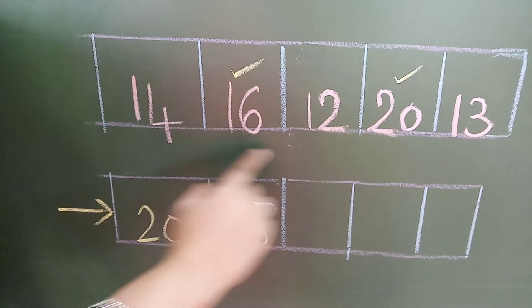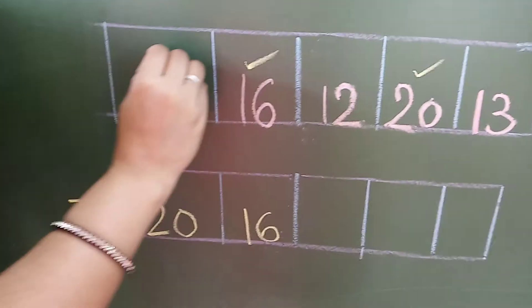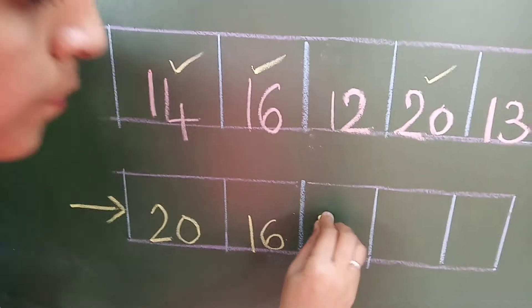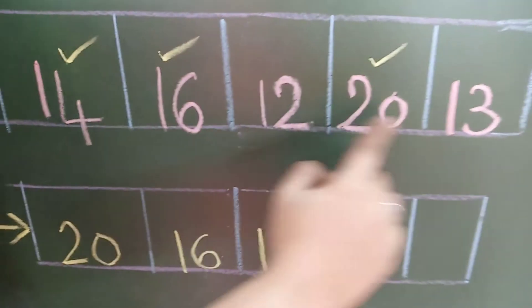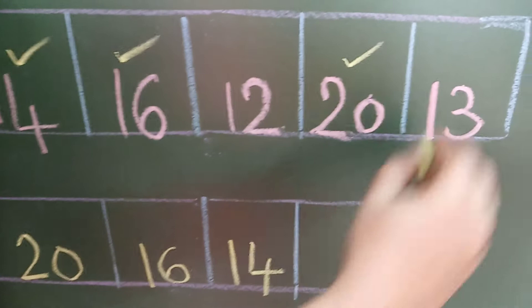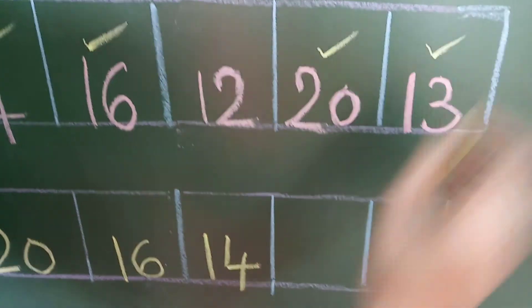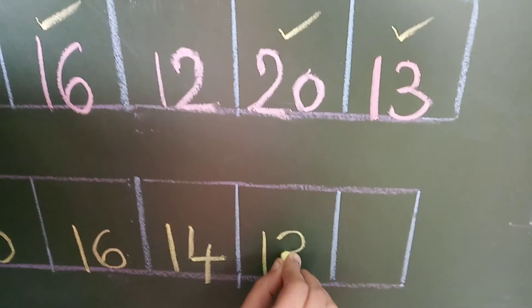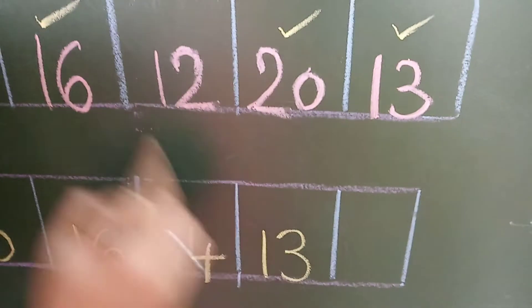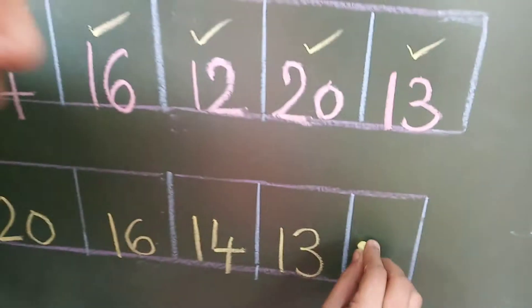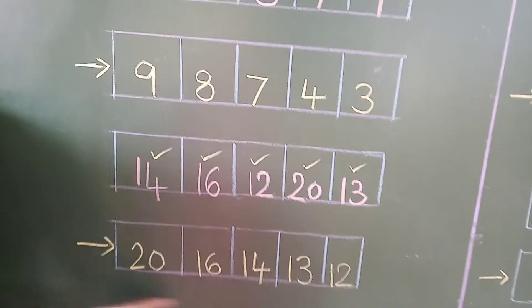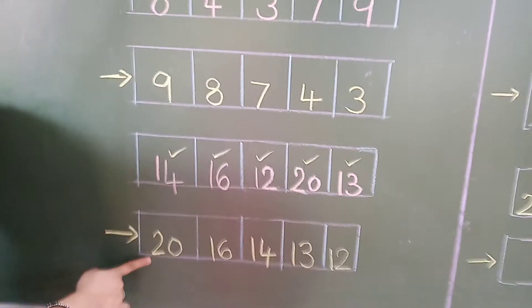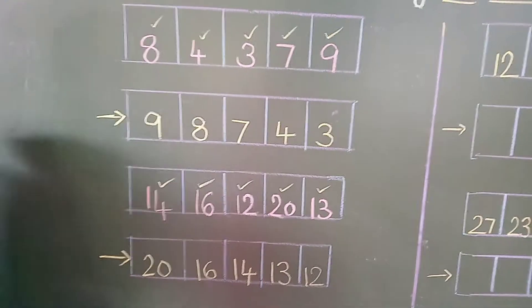Then which number will come, my dear students? 14. Before which number will come? 13 is there — yes. Put a small tick on that and write down here number 13. Then which number? 12. So students, see this series is called descending order — bigger number to the smaller number.